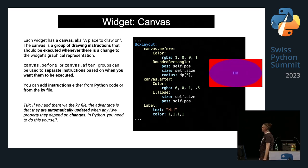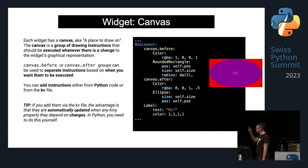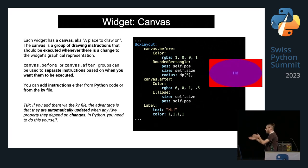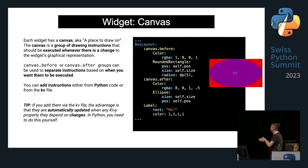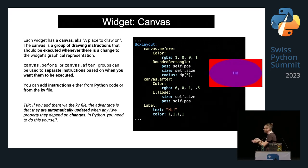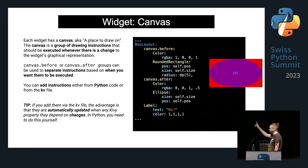Looking at the example: in canvas.before we set the color red and create a red rounded rectangle. On top of that, we place a label that says 'hi' in full white. Then with canvas.after, we place an ellipse that is blue with half the alpha value. This is the resulting visual.